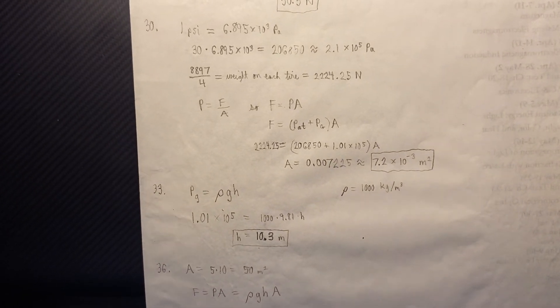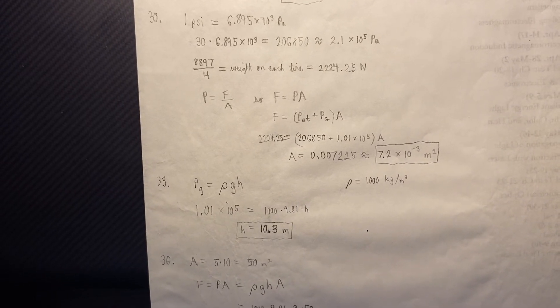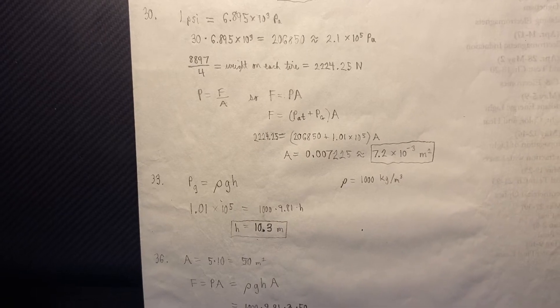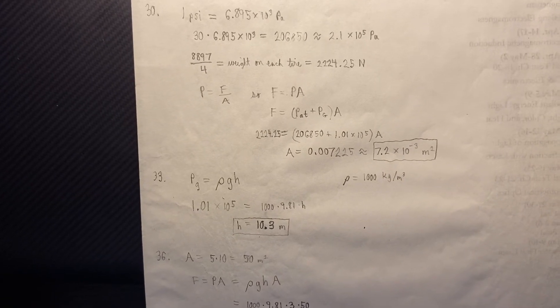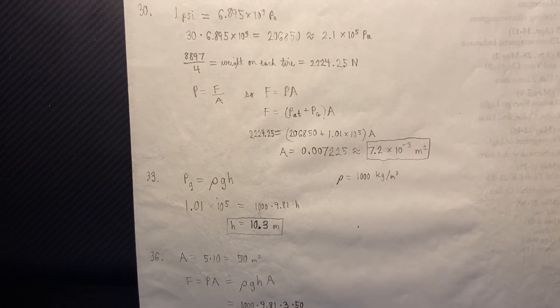Number 33, we have a gauge pressure, or PG, equals rho GH, and so with just some plugging and chugging, we get H equals 10.3 meters.